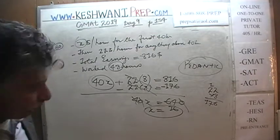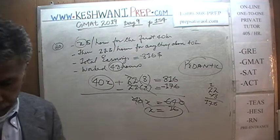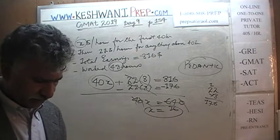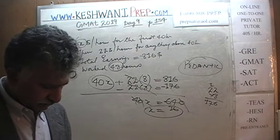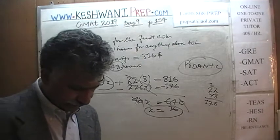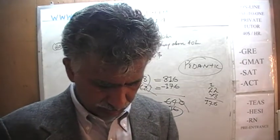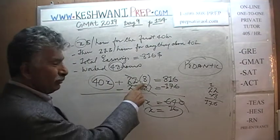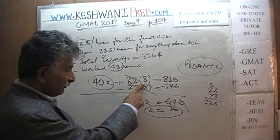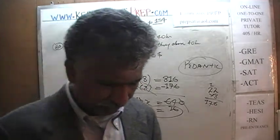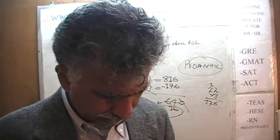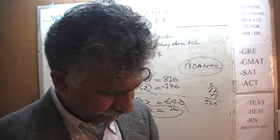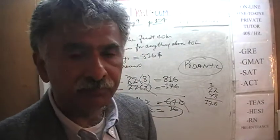Before we go — we mentioned the word 'pedantic.' Pedantic simply means to show off one's learning or knowledge. For example, we could have written '48 minus 40' instead of just '8,' but we don't have to be pedantic. I'll see you tomorrow. Bye now.